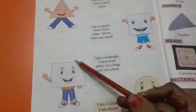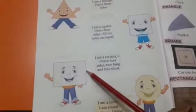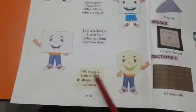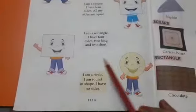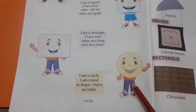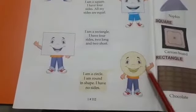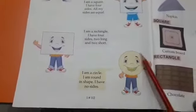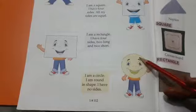I am a circle, I am round in shape, I have no sides. This is a circle, this is round and has no sides. The circle has no side.